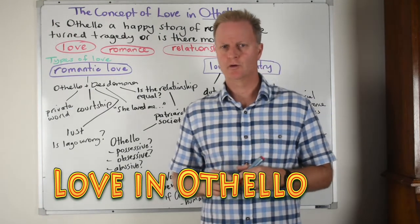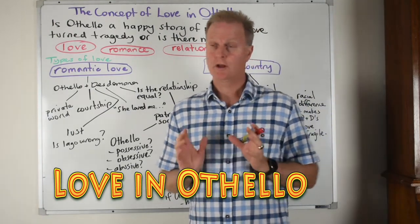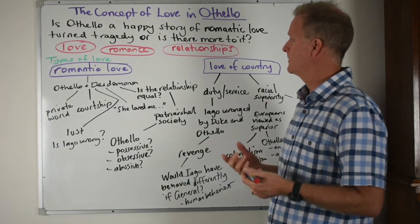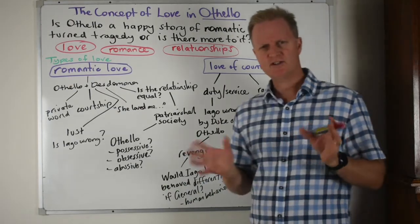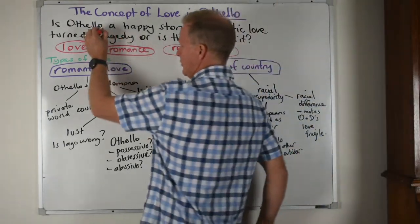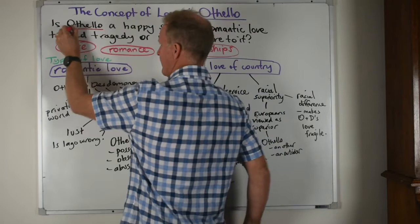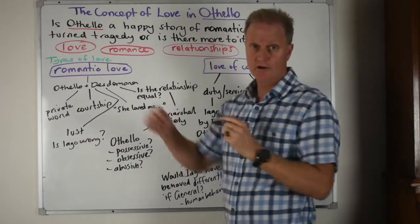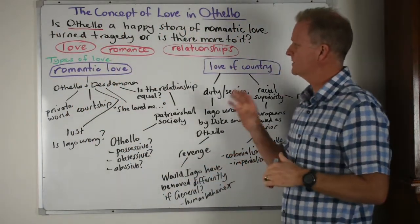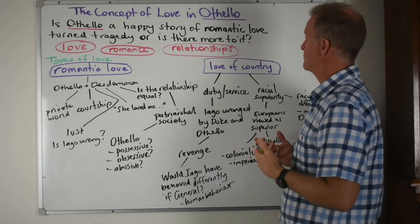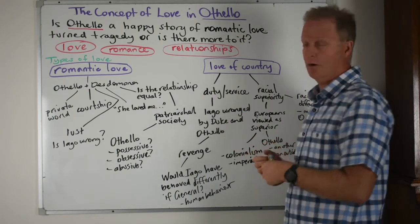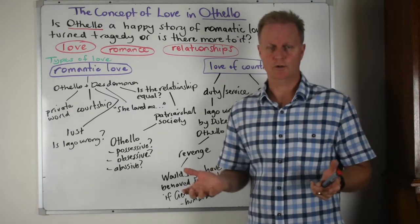In this tutorial we're going to explore the concept of love in the play Othello. I wanted to start by framing this question — because it's a complete text we underline it. The question I'm going to ask is: is Othello a happy story of romantic love turned tragedy, or is there more to it?